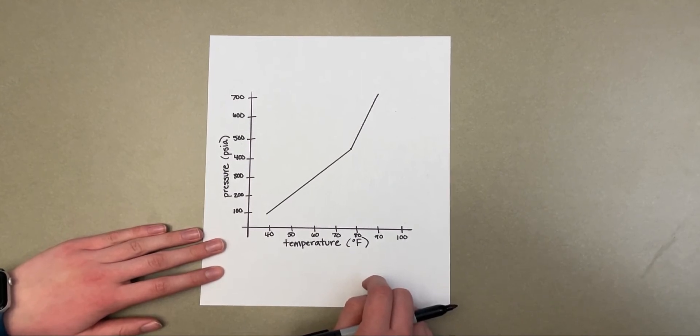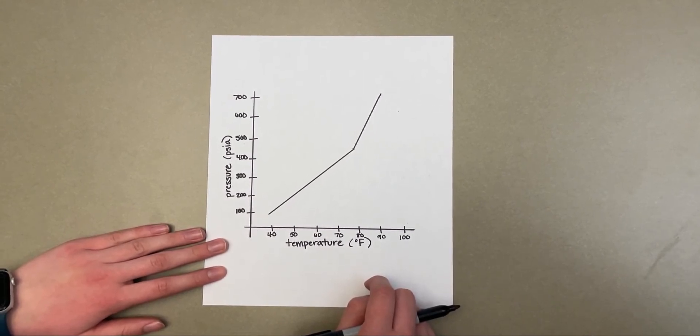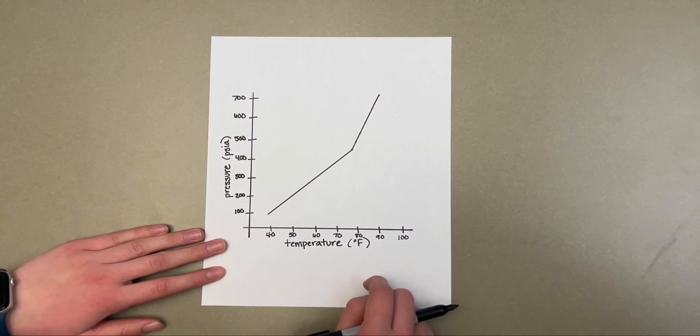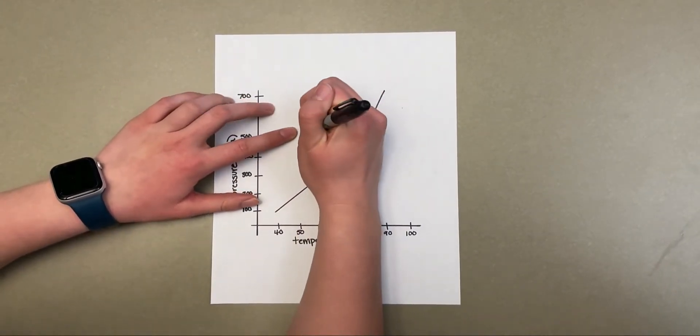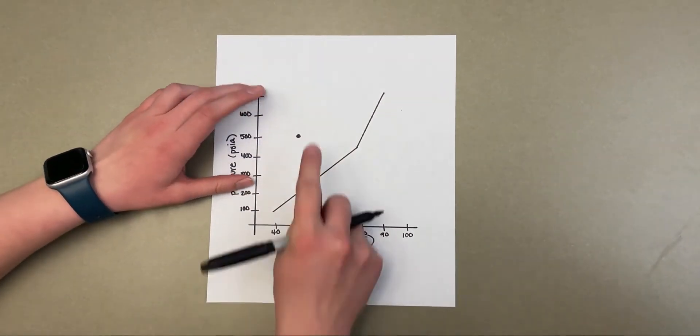This line represents our specific gravity gas, and now we are going to come in at 50 degrees Fahrenheit and 500 psi and make a dot. As you can see, we are above the specific gravity gas line, which is indicative of having hydrate formation.